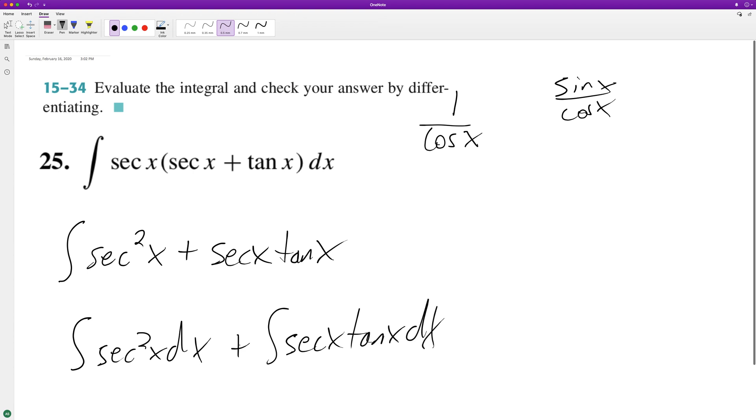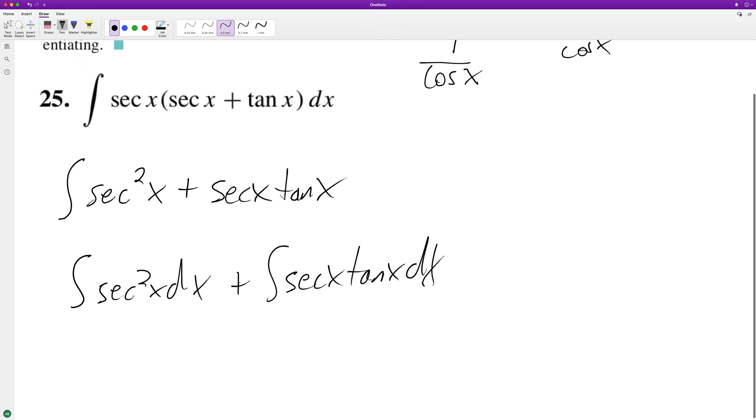The integral of secant squared of x is tangent of x, and the integral of secant of x tangent of x is equal to secant of x, and then we have our generic constant c.